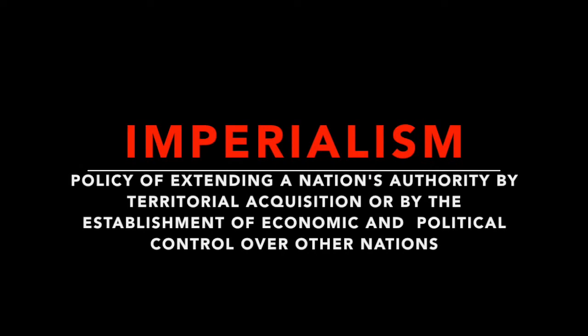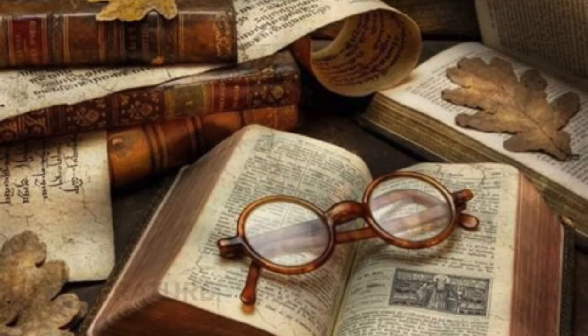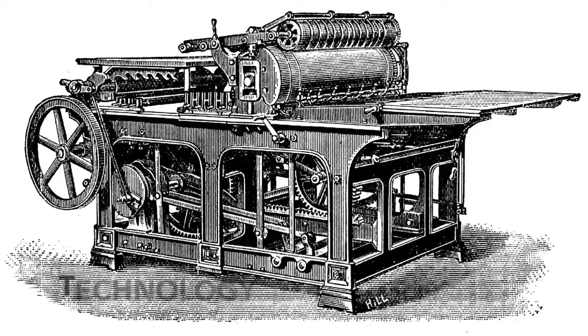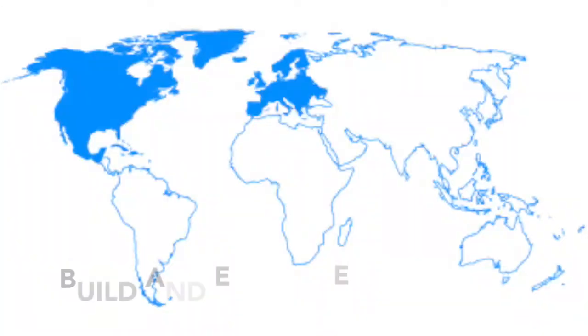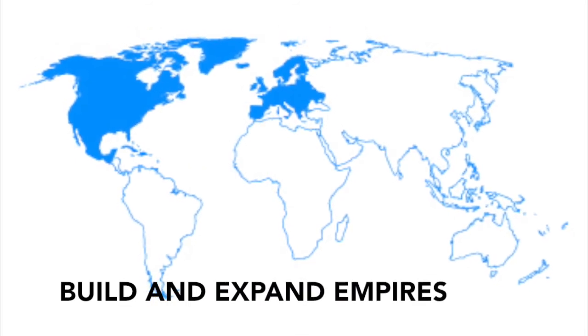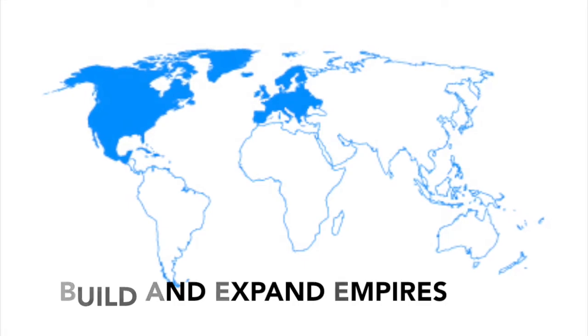Defined as the policy of extending a nation's authority by territorial acquisition or by the establishment of economical and political control over other nations, imperialism was first introduced in the 15th century but mostly took place in the 19th. Huge progresses were made in many different sectors such as literature, art, and technology, and it virtually brought the entire globe under its control. North American and European countries were determined to build and expand their empires, pushing them to do whatever it took to implement their authority.